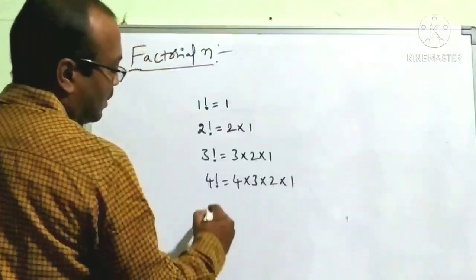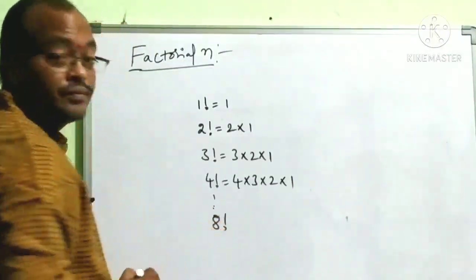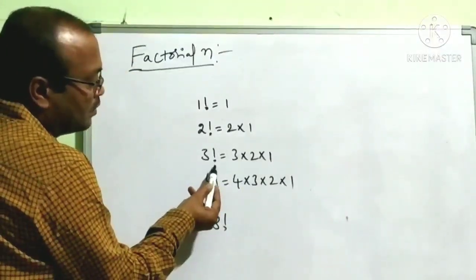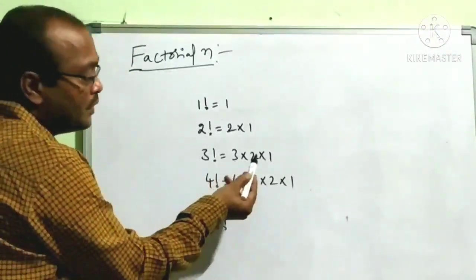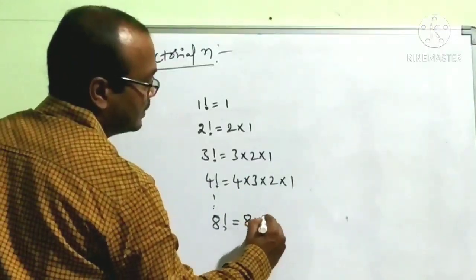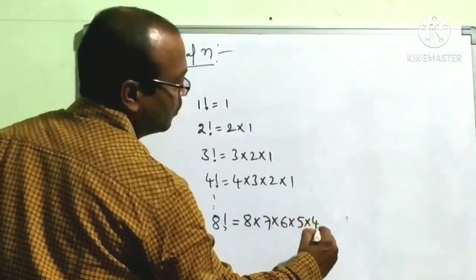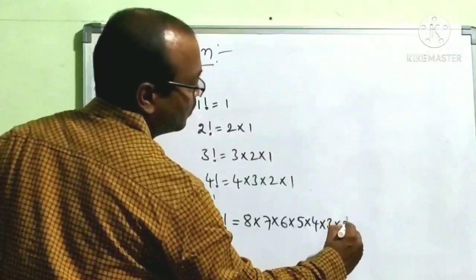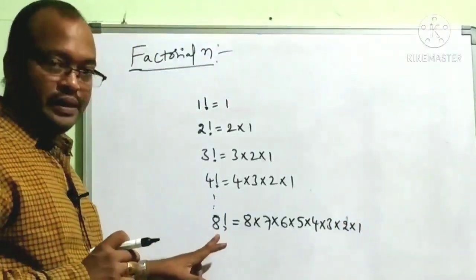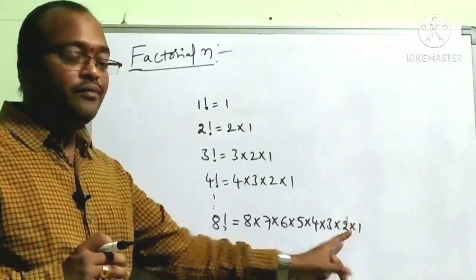What is 8 factorial? Observe once: we start a factorial. 8 factorial equals 8 × 7 × 6 × 5 × 4 × 3 × 2 × 1. Any factorial starts with that particular number and ends with 3, 2, and 1.